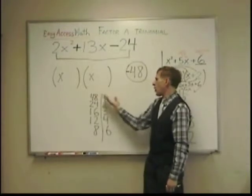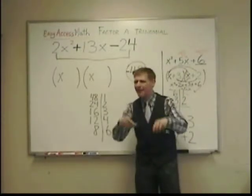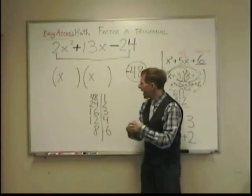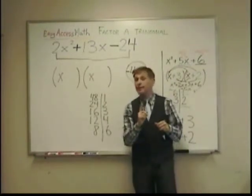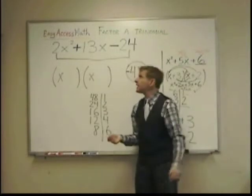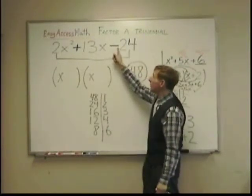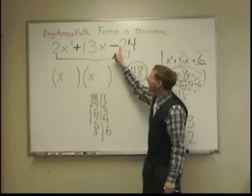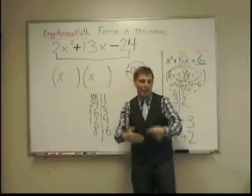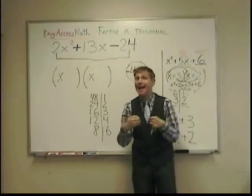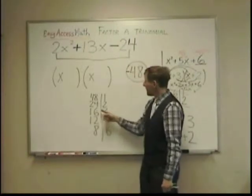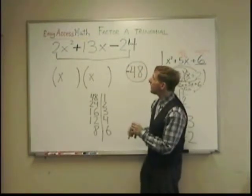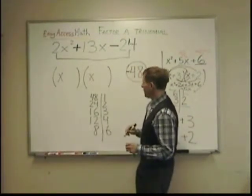Well, 48 and 1, that would subtract to 47. That's not 13. 24 and 2 would subtract to 22. That's not 13. Remember, we're subtracting because the signs were unlike. If the signs were like, this last number would be positive. Then we would be looking for two numbers that add. 16 and 3, they subtract to 13, don't they? Okay, so 16 and 3 are my numbers.